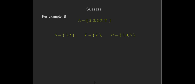So let's just look at an example. We have the same set A with elements 2, 3, 5, 7, and 11. Those are the first five prime numbers. And then we have several smaller sets. We have S has elements 3, 7, and T only has one element, 7.